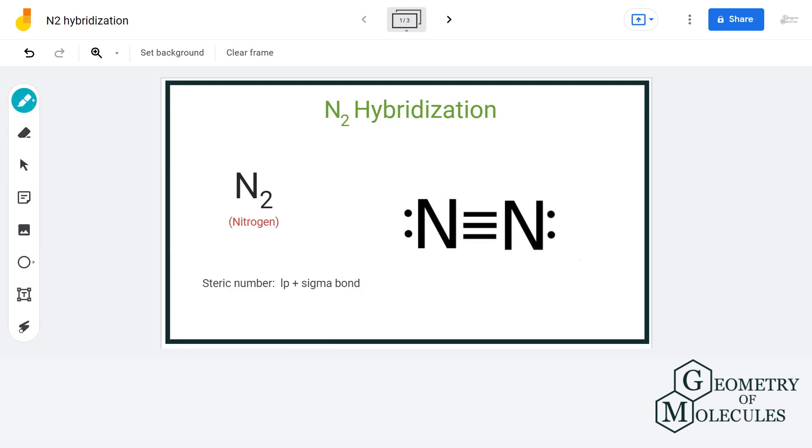In other words, steric number equals the sum of sigma bonds plus lone pairs of electrons attached to the atom whose hybridization we have to find.